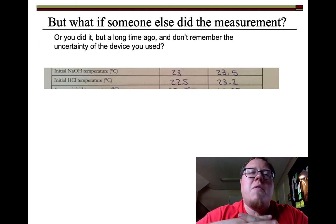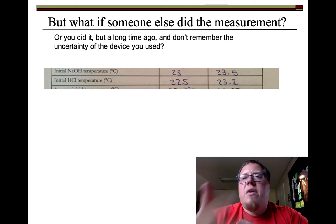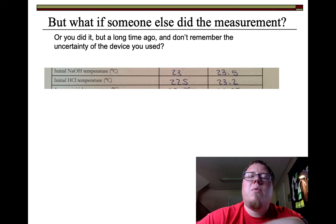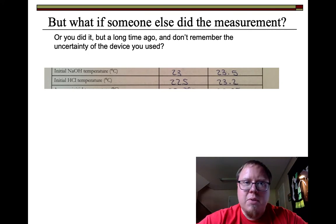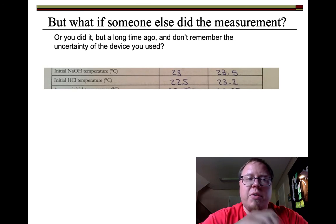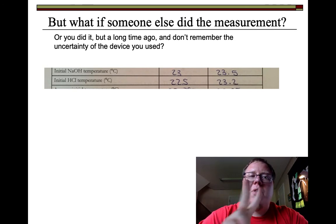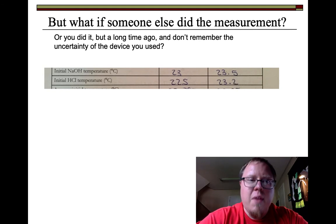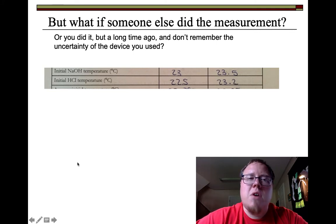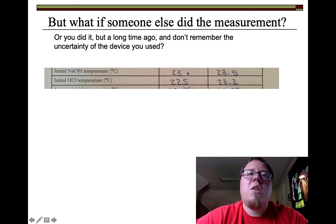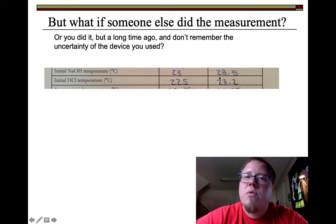Significant figures is a way of describing measurements. If someone else does a measurement, or if you did it a long time ago, it's a way to talk about how uncertain you are. Take a look at some student data — they measured the temperature of NaOH and the temperature of HCl. The first trial says 23 degrees Celsius, and then 23.5 degrees Celsius the second time.